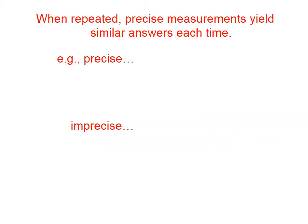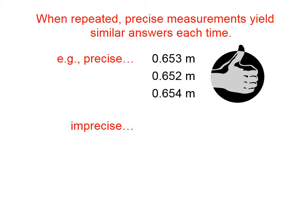When repeated, precise measurements yield similar answers each time. Let's say that you and two lab partners are measuring a length, and each of you measures it once, and these are your answers. Those are precise measurements. They're very, very close.